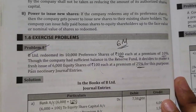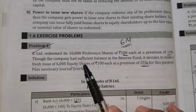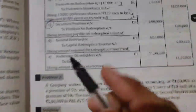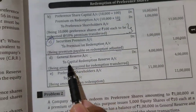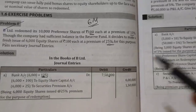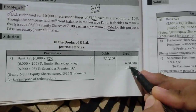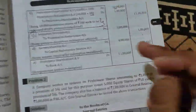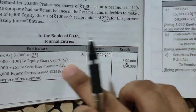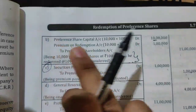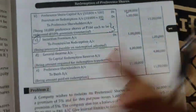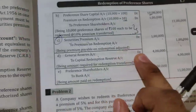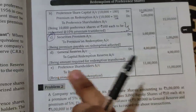Next, general reserve account is debited to capital redemption reserve account. Look at the question — it says the company had sufficient balance in the reserve fund, which is known as general reserve. The 4 lakh figure comes from: equity share capital issued is 6 lakh, preference share capital to be redeemed is 10 lakh — so 10 lakh minus 6 lakh equals 4 lakh to be transferred to capital redemption reserve.